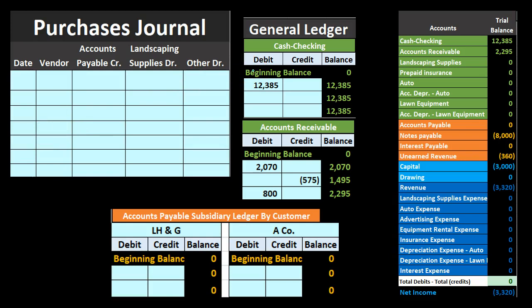As we do this, we also need to create the accounts payable subsidiary ledger. This is a key component because the purchases journal deals with vendors and accounts payable — meaning we owe people or companies money. We need to list not just the dollar amounts but who we owe the money to, which is tracked in the accounts payable subsidiary ledger.